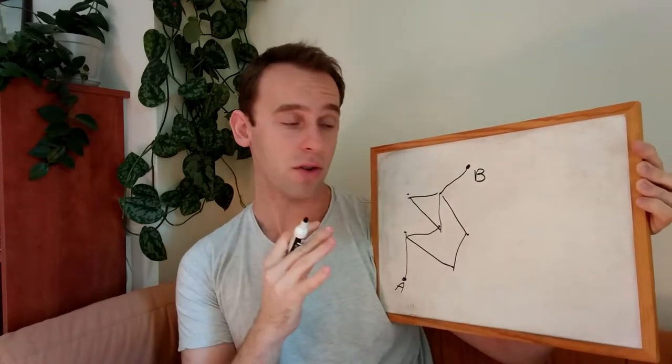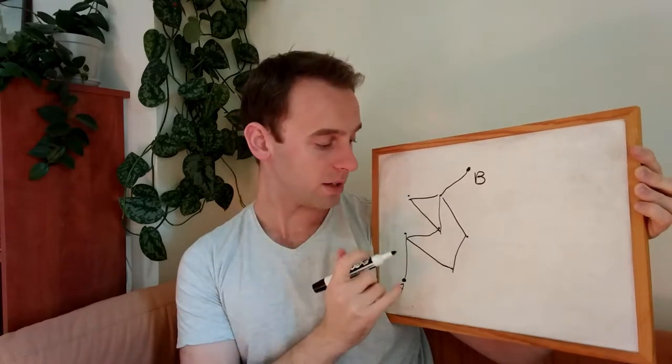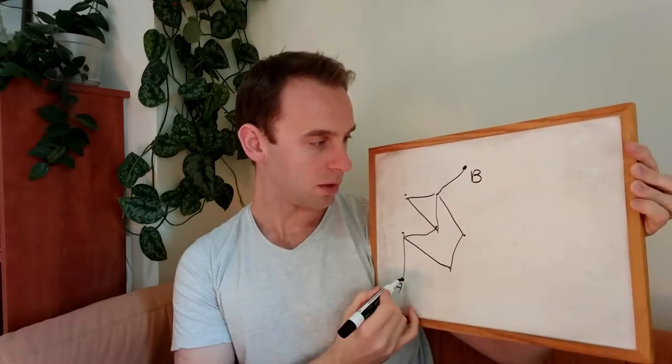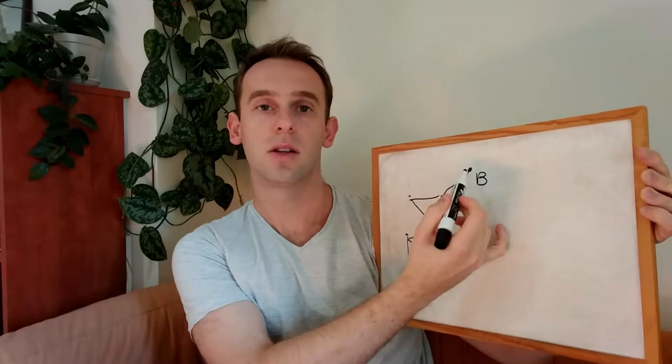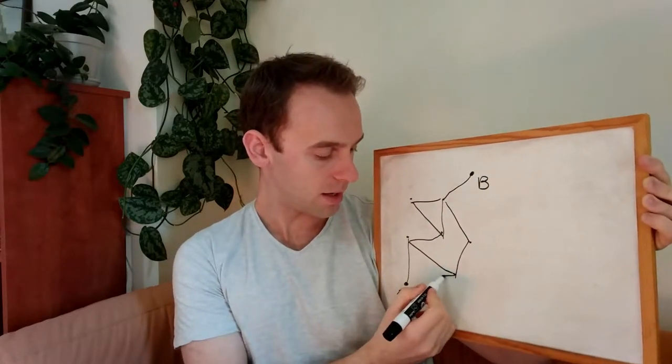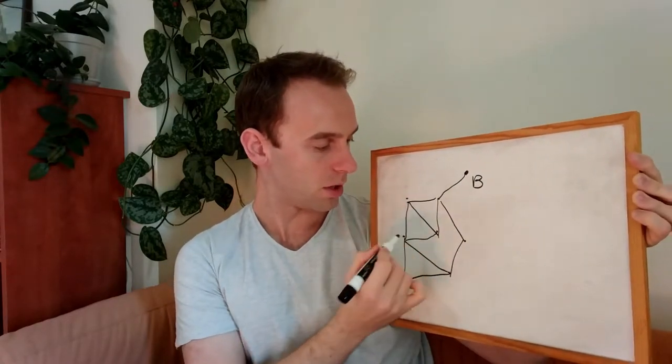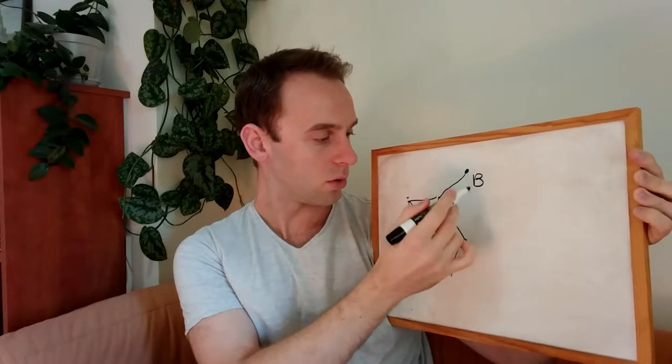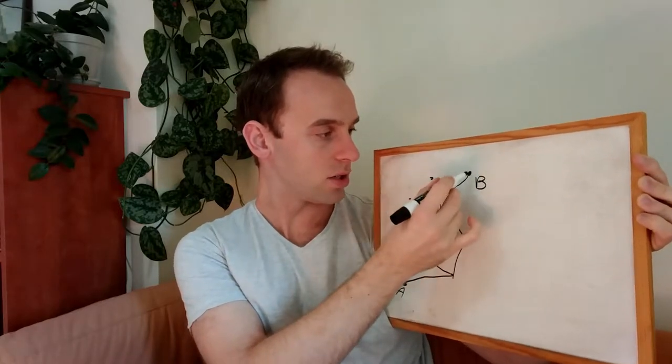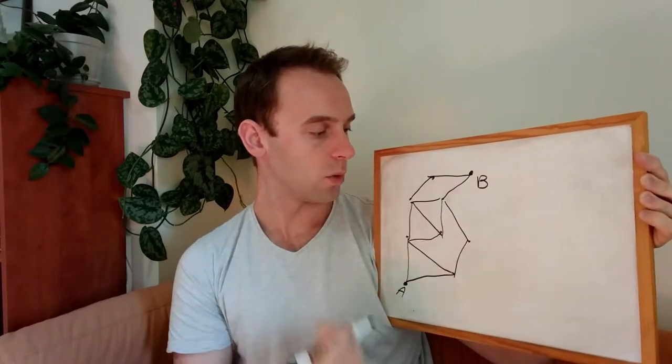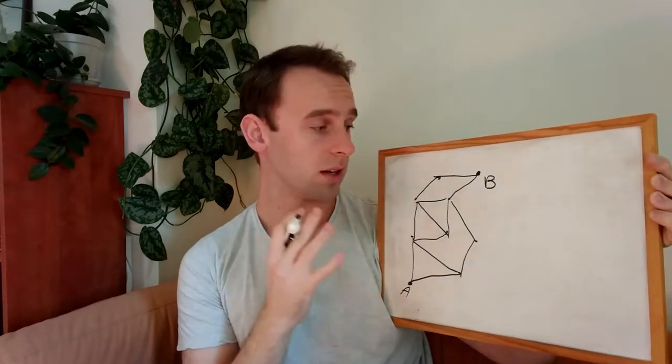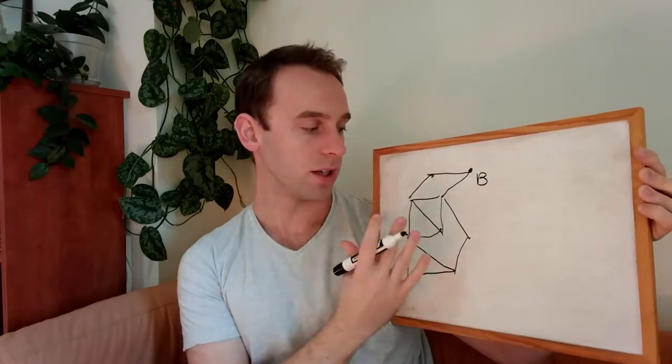So the idea of this algorithm, the BFS, is to find the shortest path between node A and node B. And let's add a few more nodes and edges, so it will be more confusing and not straightforward just from looking at it.